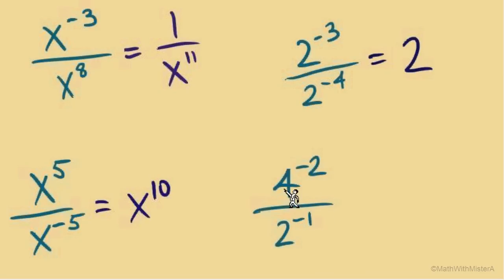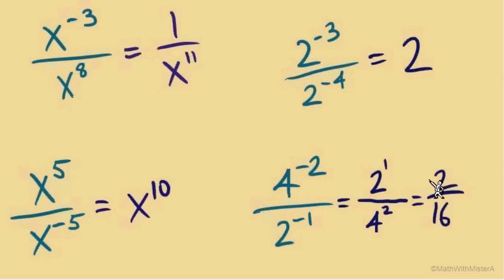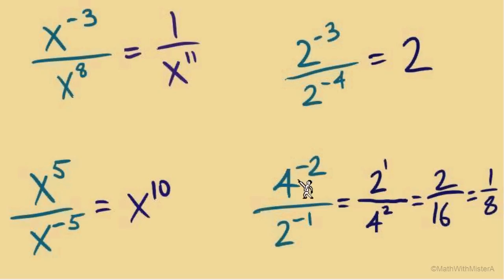My preferred approach for 2^(-3)/2^(-4): move 2 to the negative three on top down as 2 to the positive three on the bottom, and move 2 to the negative four on the bottom up as 2 to the positive four on top. Four twos on top, three on the bottom — after canceling, one two remains on top, giving 2. For the last example with different bases, 4^(-2) over 2^(-1): move 4^(-2) to the bottom as 4² and move 2^(-1) to the top as 2¹. Since bases differ, evaluate: 2 over 16, which simplifies to 1/8.